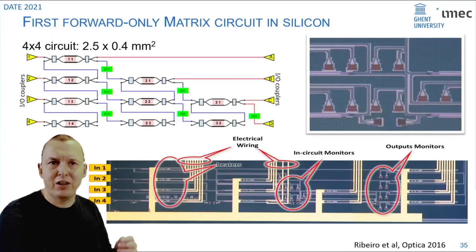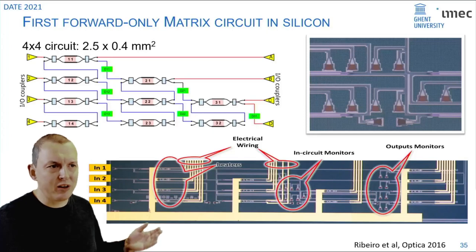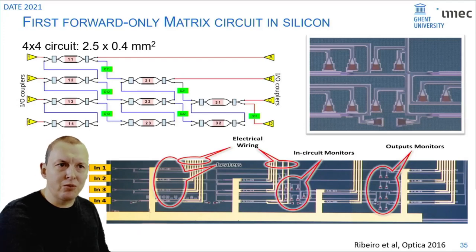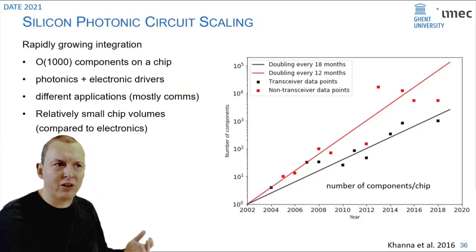The first demonstration of such a linear circuit in silicon was done by our group in Ghent in 2016 and already that chip for a 4x4 interferometer was much smaller in the order of a few millimeters across.